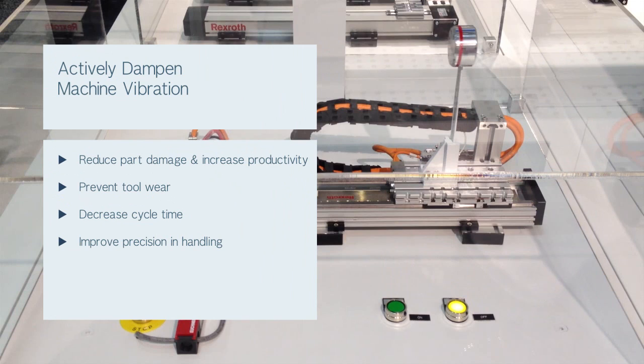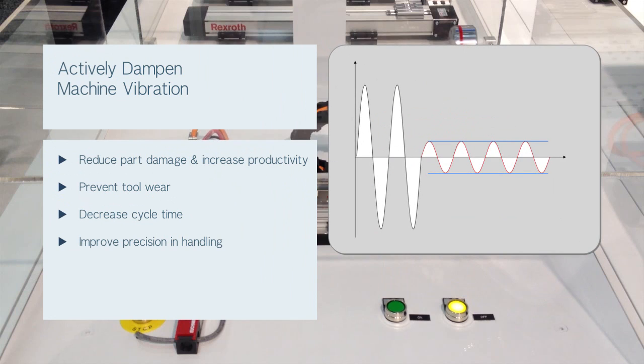and help ensure precision and sensitivity when handling fragile materials in applications such as semiconductor, lab automation, and material handling. This demonstration shows damping technology on Rexroth's interdrive-controlled CKL compact module.